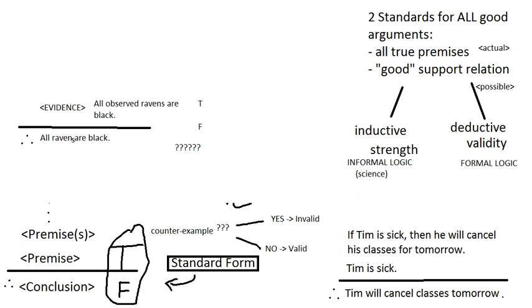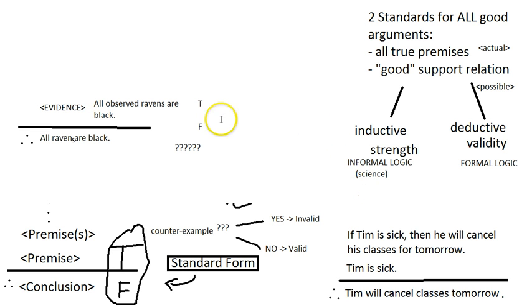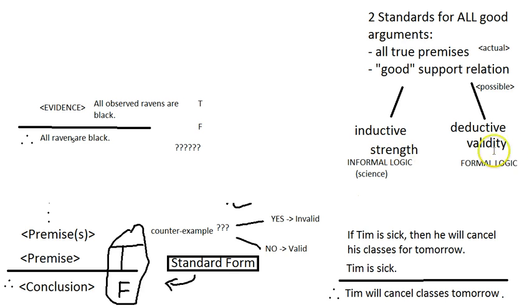Students are often drawn to saying validity is so much better than inductive strength, but really there's just a trade-off here. This is no blow against science — it's just recognizing how science actually works. Evaluating inductive strength is going to be really messy, but it is doable and we'll have clear-cut standards and principles to help. The actual testing of arguments for validity and strength is what the whole second third of the class is devoted to.